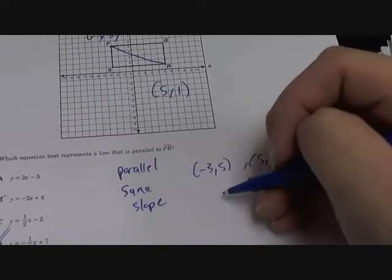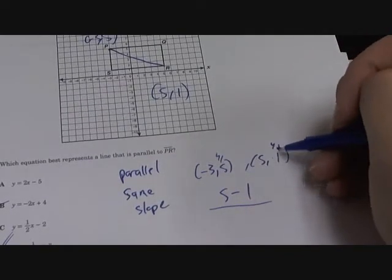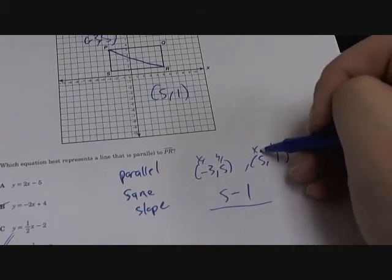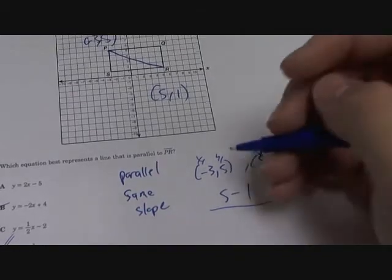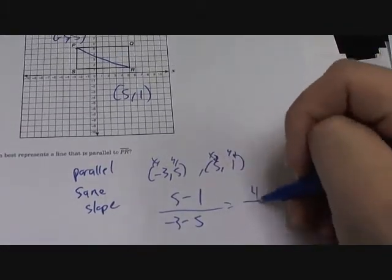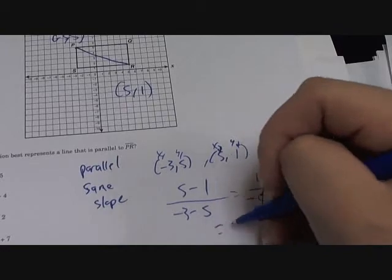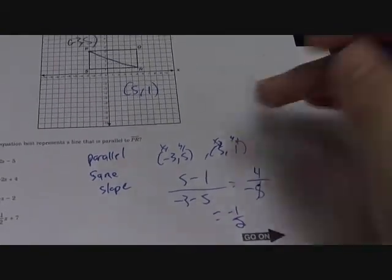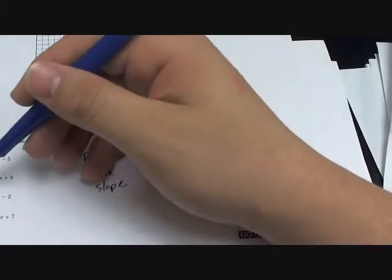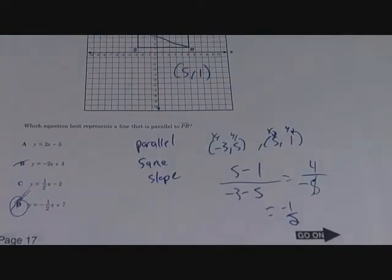So we do 5 minus 1, this is y1 and y2, y1 minus y2, and x1 minus x2. You get 4 over negative 8. This gives you negative 1 half. So the slope is negative 1 half, so the answer is D, negative 1 half.